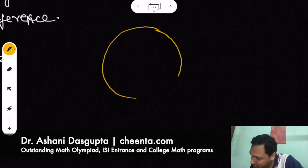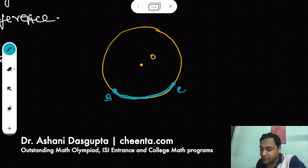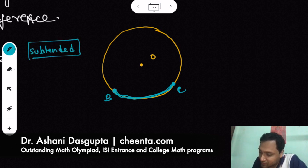You have a circle and suppose O is the center of the circle, and B, C are two points on the circumference. So you have to look at the arc BC, and we say that the angle subtended by the arc - this word sometimes confuses students.